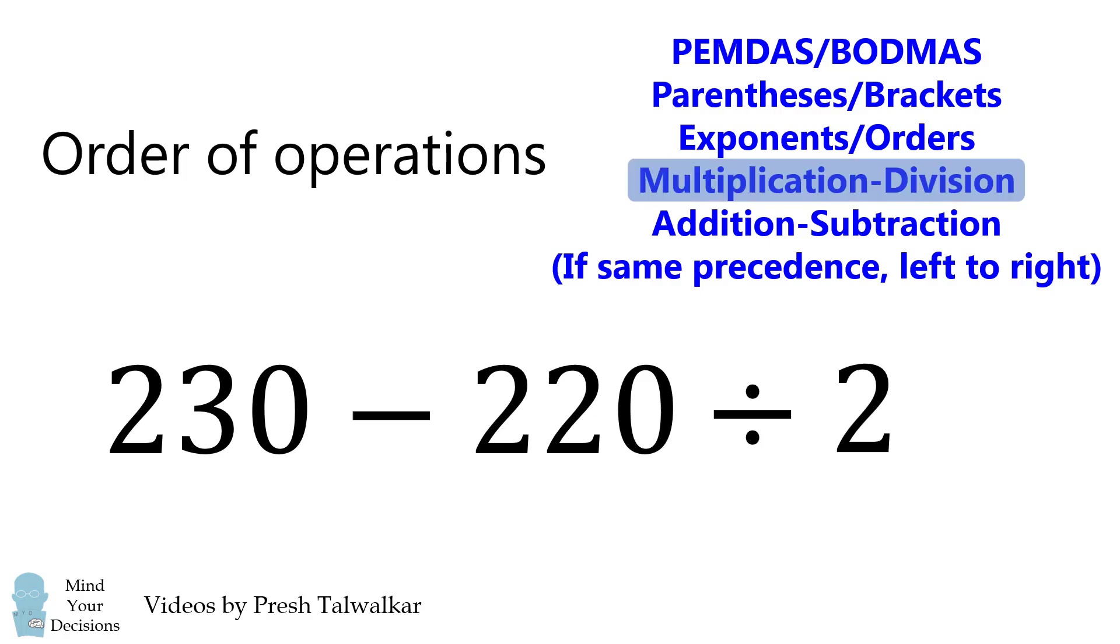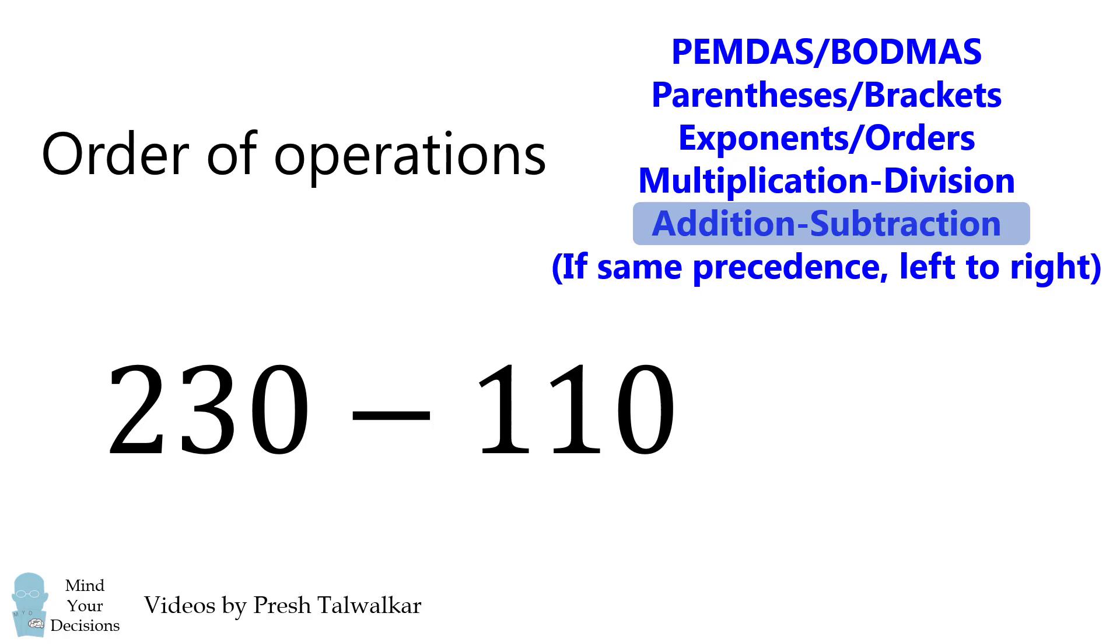So first we're going to evaluate the division. We take 220 divided by 2 and we get the result of 110. We then evaluate the subtraction of 230 minus 110 and we get the answer of 120. And this is without a doubt the correct answer to this expression.